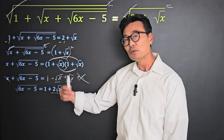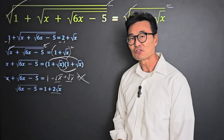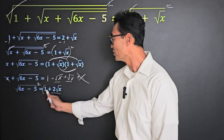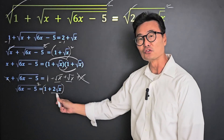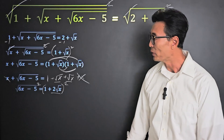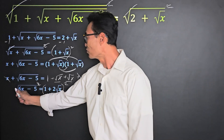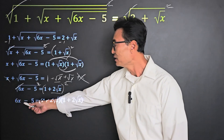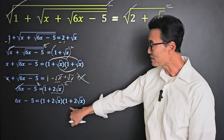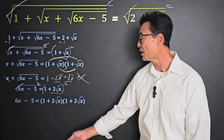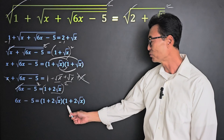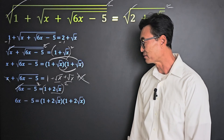Again, we're going to repeat what we did before to get rid of that square root sign. We're going to square the left side of the equal sign, and notice that once again we're going to square the entire right side of the equal sign, where the square sign and the square root sign will cancel out, leaving us with 6x minus 5 on the left side. On the right side, we wrote it out as 1 plus 2 root x times 1 plus 2 root x.